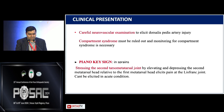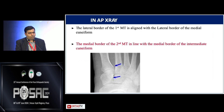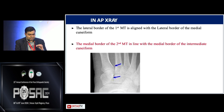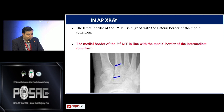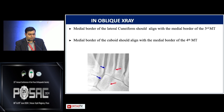Imaging-wise, it's important to get all three views: AP, lateral, and oblique. Always try to get a weight-bearing X-ray if possible. On the AP X-ray, draw a few lines to indicate whether the Lisfranc joint is intact: the first line is along the lateral border of the first metatarsal in line with the lateral border of the medial cuneiform; the second line is the medial border of the second metatarsal along with the medial border of the middle cuneiform.